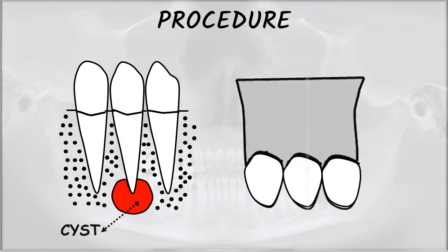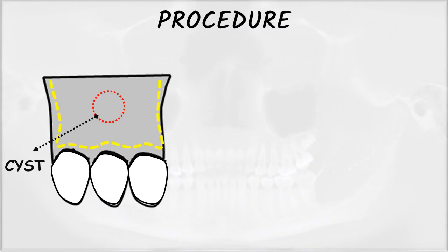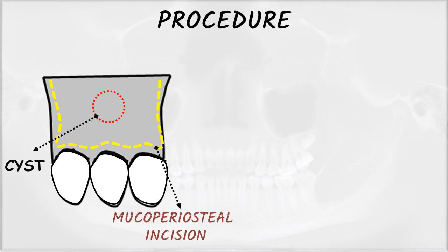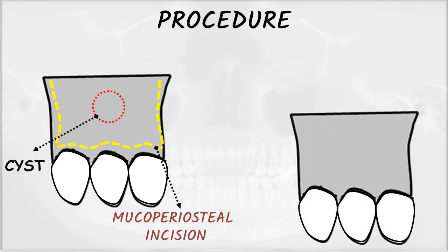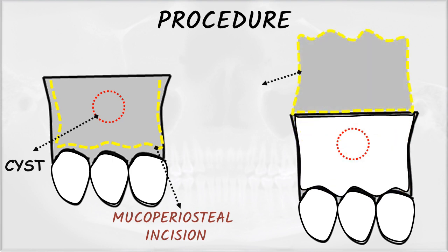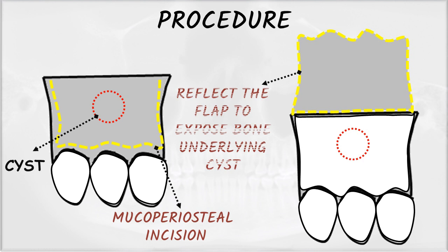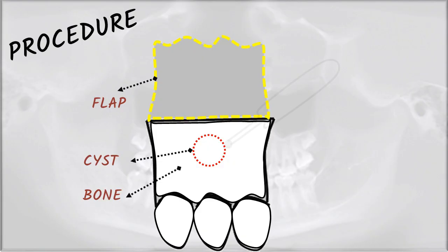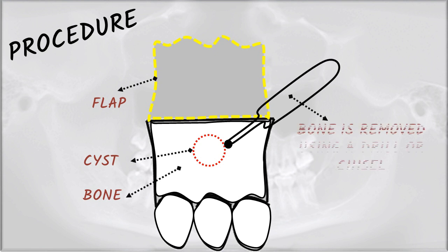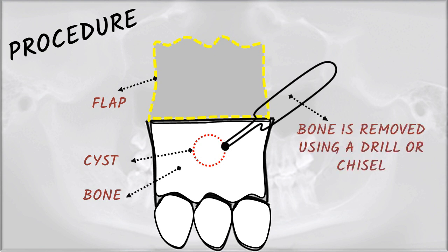Procedure: This is a cyst which is associated with the root of the tooth — this is an external view of the cyst. Firstly, give a mucoperiosteal incision. After giving the mucoperiosteal incision, reflect the flap as you can see in the figure, to expose the bone underlining the cyst. Next, the bone is exposed.